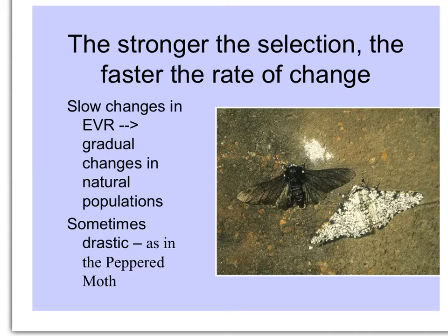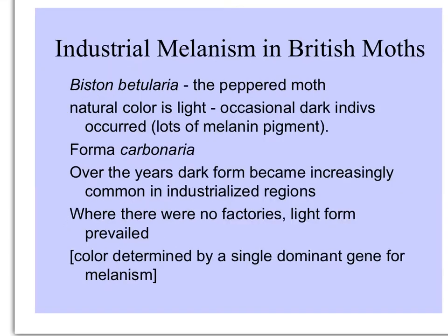If there are slow changes in the environment, we see gradual changes in natural populations. But sometimes, often a human intervention will cause a drastic shift, as was seen in the case of the peppered moth. H.B. Kettlewell was a scientist who described industrial melanism in British moths — the species Biston betularia, the peppered moth.